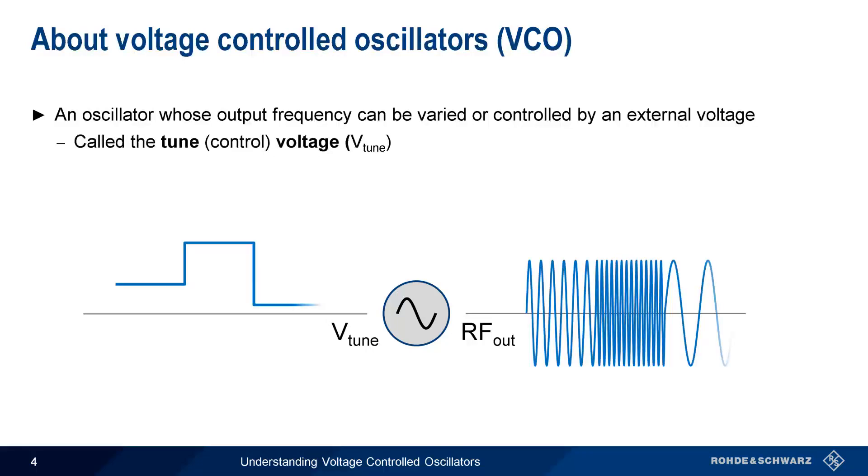increasing or decreasing V-tune causes the oscillator output frequency to increase or decrease. The tune voltage may be changed in discrete steps, as shown here, or continuously.